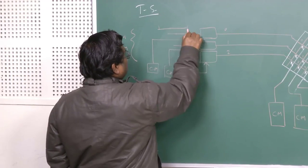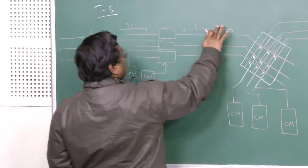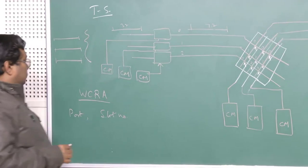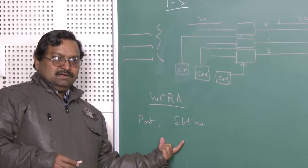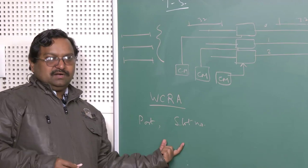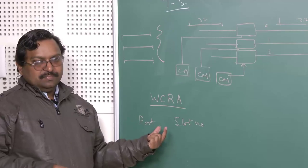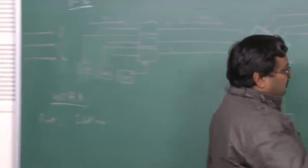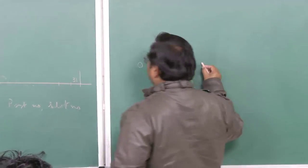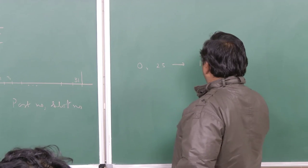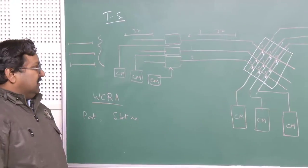You will have 30 slots here and 32 basically. You need to first create a map — these things are given by your switching requirement; they are not governed by the switch itself; you just have to generate the map. For example, you say that port 0, slot number 25, should be mapped onto port number 1, slot number 2. How will this be done?